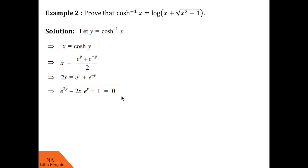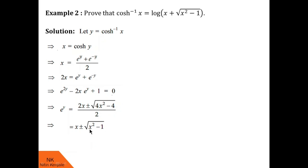This is a quadratic equation in e^y. Its root is found using the formula (−b ± √(b² − 4ac)) / 2a, giving e^y = x ± √(x² − 1). Note that √(x² − 1) exists only if |x| > 1, and if |x| > 1, then x − √(x² − 1) is a negative value, so we discard that case. Therefore, e^y = x + √(x² − 1), and so y = log(x + √(x² − 1)). Since y = cosh⁻¹(x), we finally conclude that cosh⁻¹(x) = log(x + √(x² − 1)).